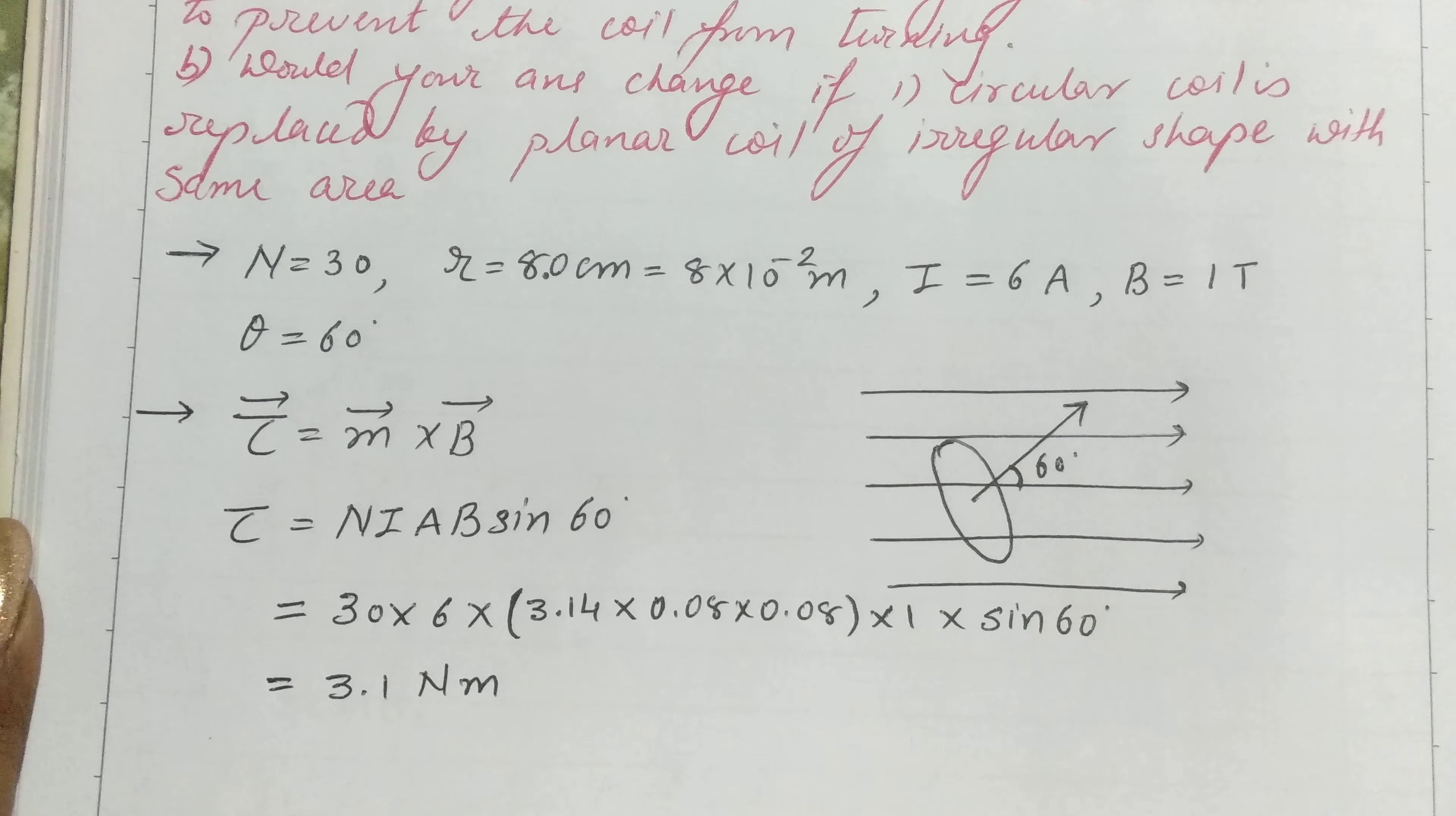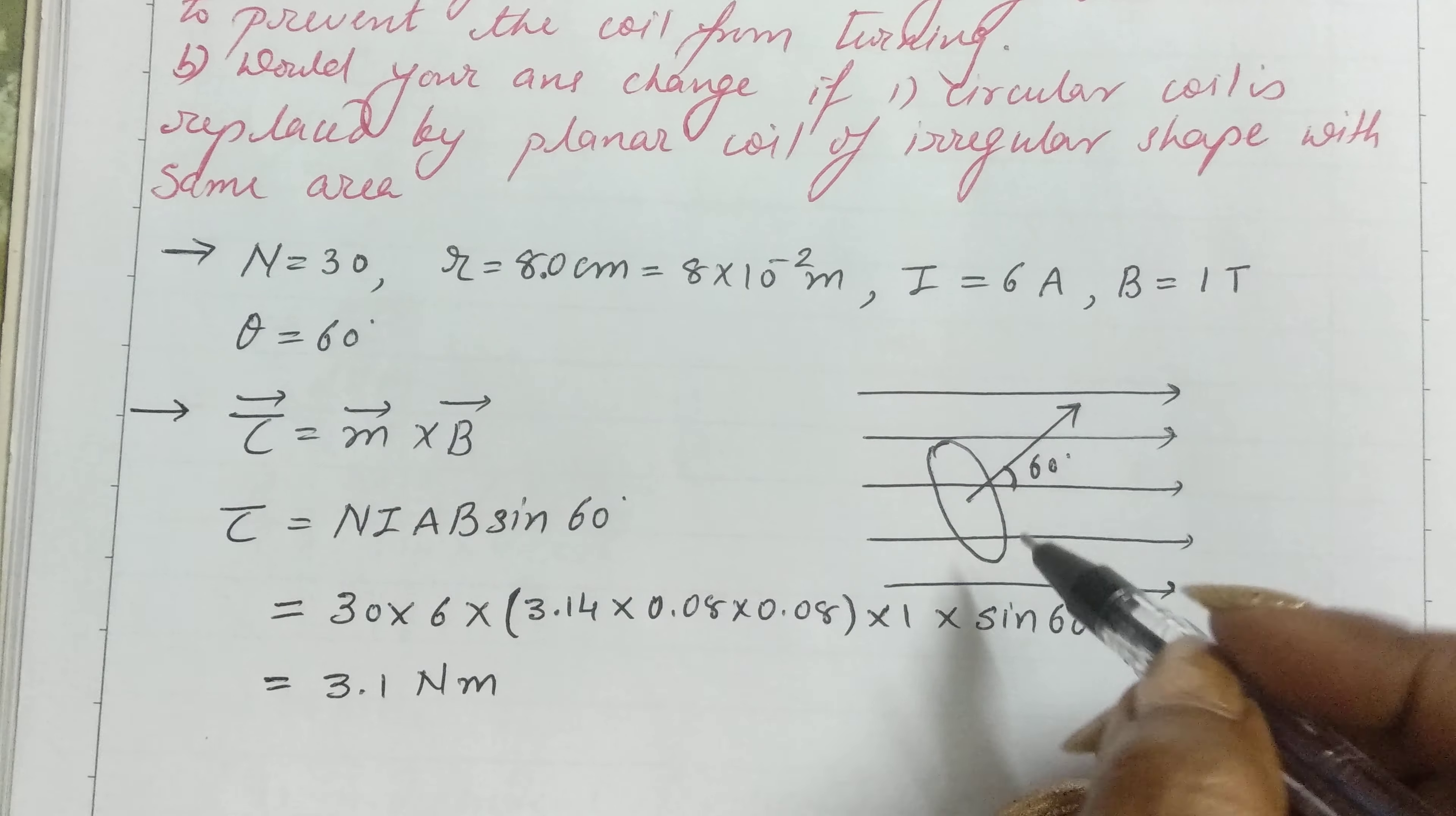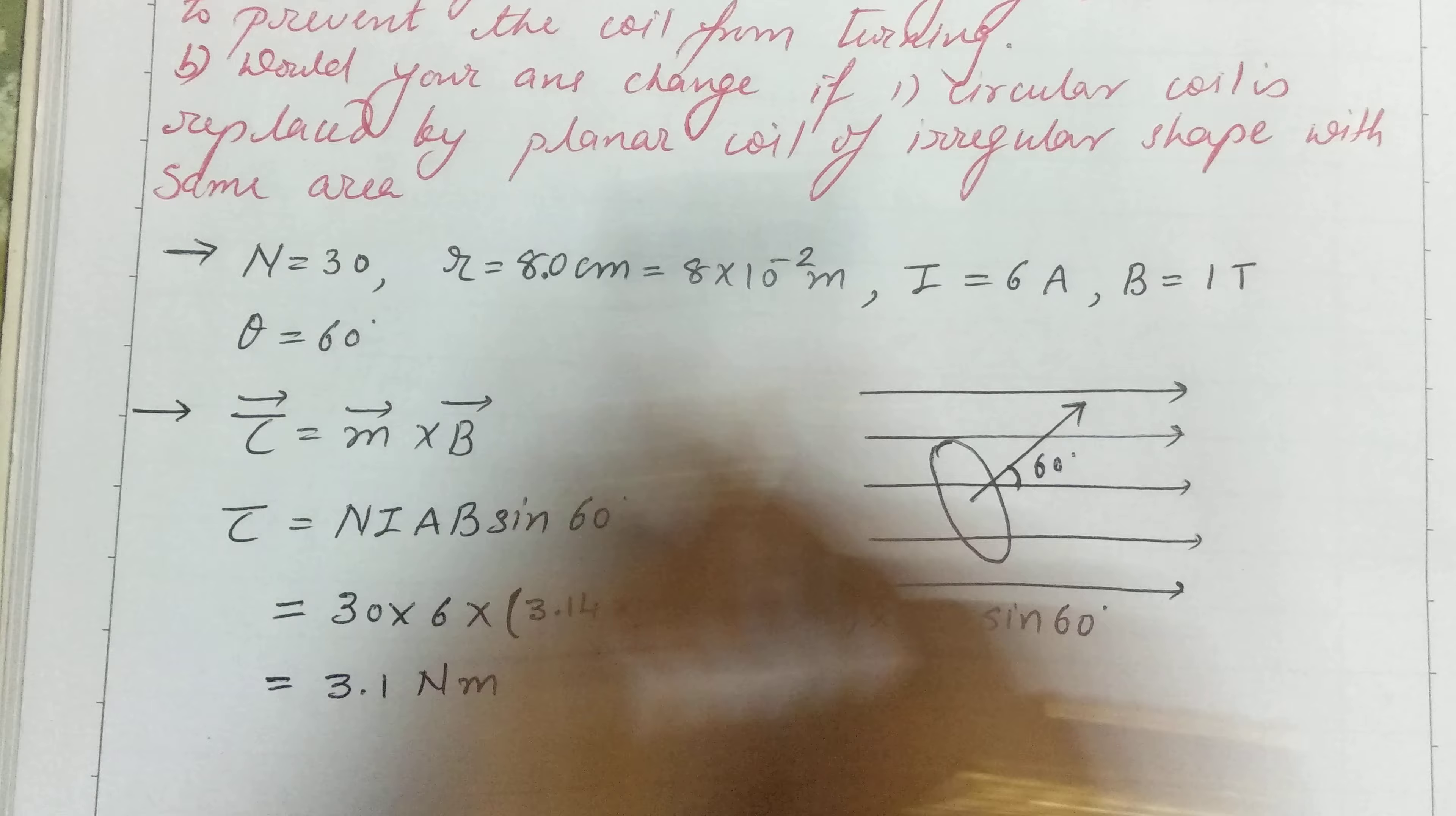It will remain the same because the formula for torque is valid for any planar loop of any shape. The answer only changes if area changes, but here they specified the same area.